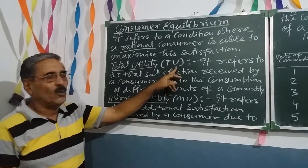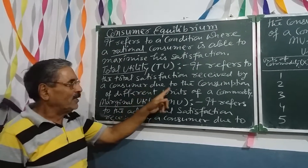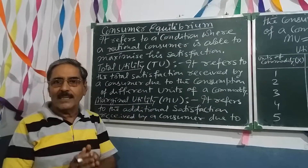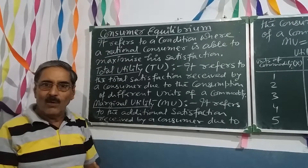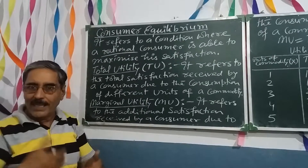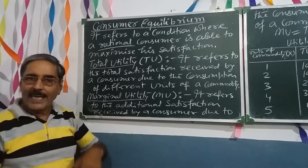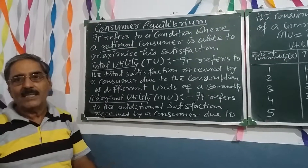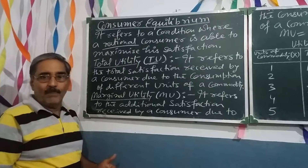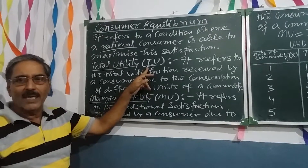The first term is Total Utility, symbolically TU. It refers to the total satisfaction received by a consumer due to the consumption of different units of a commodity. For example, suppose a consumer is consuming mangoes. After eating the first mango he is a little bit satisfied, then eating the second mango gives some additional satisfaction, and the third mango gives some more. When we add up the individual satisfaction derived from each and every unit of mango, we get Total Utility.